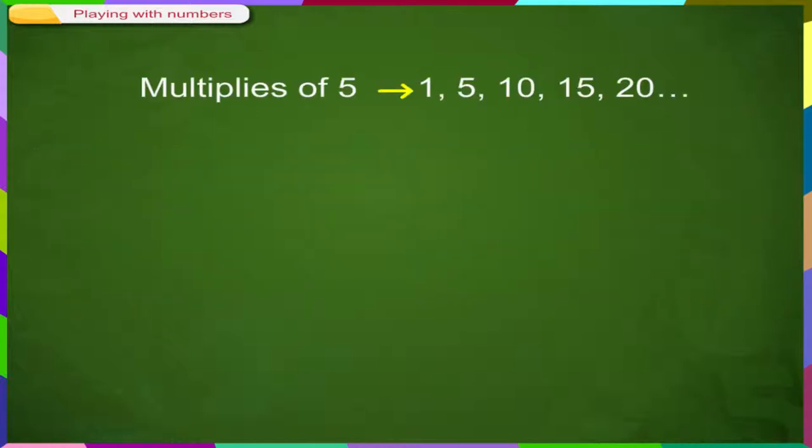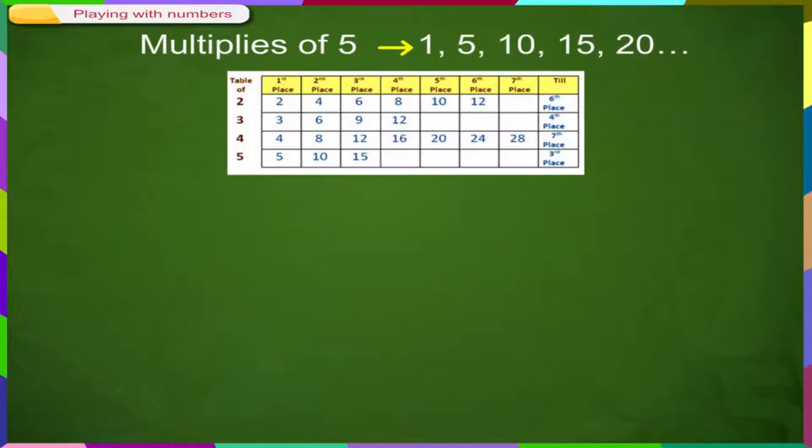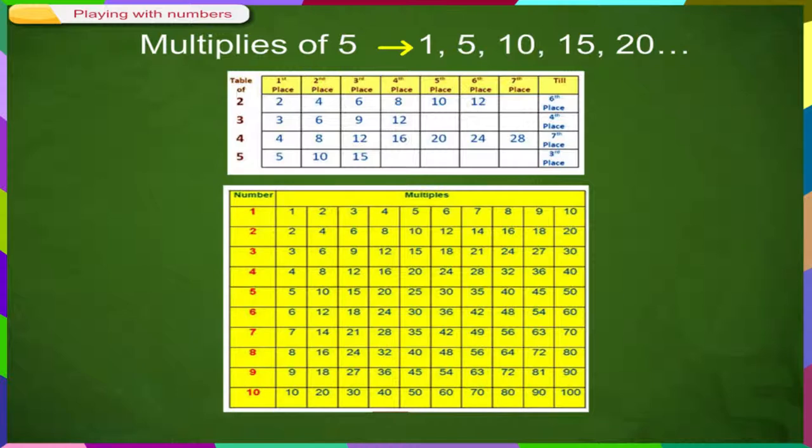We can say that 1, 5, 10, 15, 20 and so on are the multiples of 5. In the table, we can observe the first 10 multiples of the numbers starting from 1 to 10.